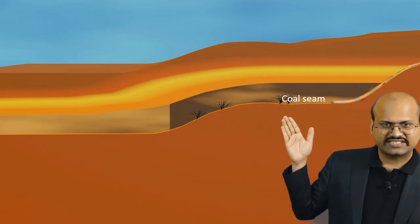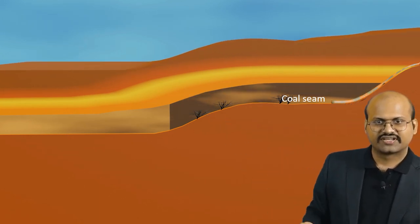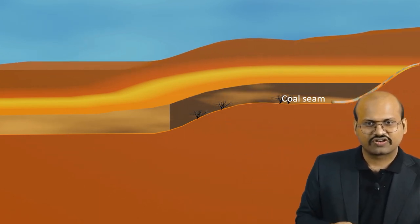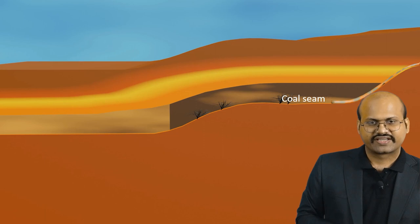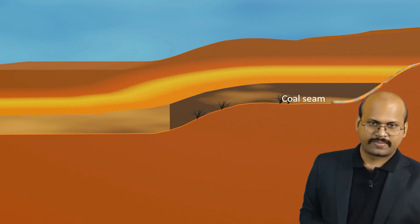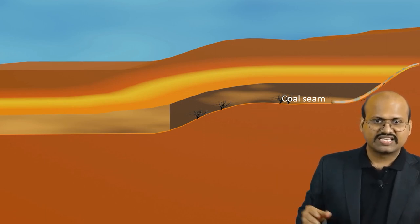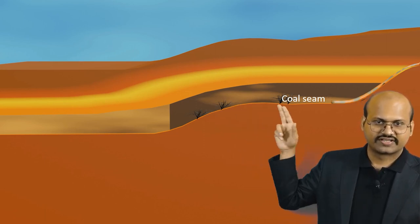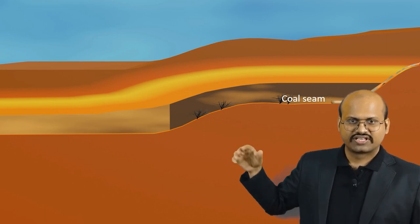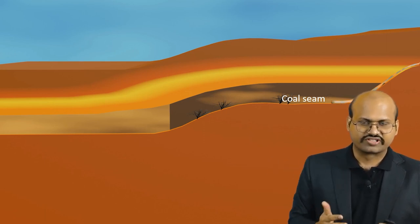Due to extensive heat and pressure, the buried vegetation over millions of years gets converted to coal. This large layer of coal within the earth is called a coal seam.